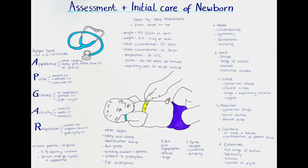Other important steps of the initial care include applying the cord clamp to the umbilical cord and obtaining footprints as well as identification bands. The identification bands are placed on the newborn's ankle and/or wrist and contain information such as the baby's full name, gender, date of birth, and hospital bed. Footprints are used as a form of identification similar to fingerprints — the foot is preferred over the finger since newborns move a lot and curl their tiny hands.